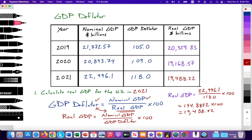We can see that GDP fell from 2019 to 2020 due to COVID — the lockdown, the pandemic, being mandated to stay at home, reduced consumption and investment spending — so real GDP decreased. But then as we exited the pandemic, GDP increased from $19,168.57 billion to $19,488.22 billion.